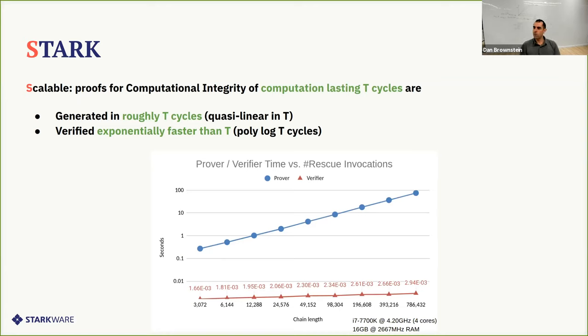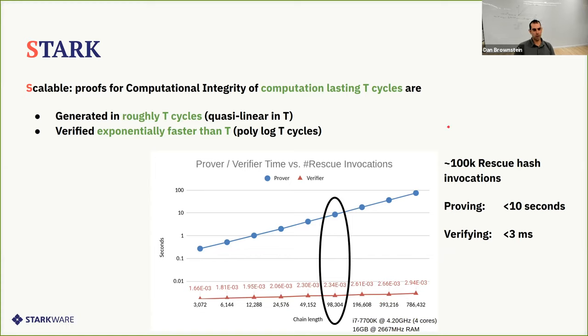So a proof system is considered to be STARK if it is scalable. And by scalable, it means that for computation, it's less T-cycles. In order to generate proof, it takes roughly T-cycles. It is quasi-linear in T. And it is verified much faster than that, exponentially faster. And here you can see a benchmark of our open source project. So this is the prover time in seconds and the verification time in milliseconds. And this is for proving this number of hash invocations.